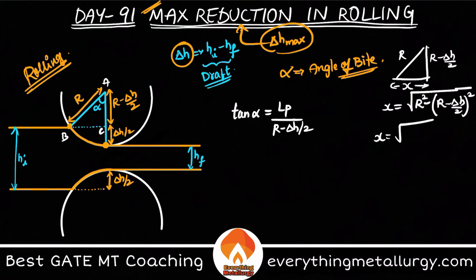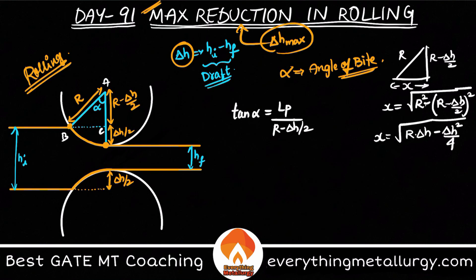After expanding, r squared gets cancelled and you get x equal to the square root of r times delta h minus delta h squared by 4. Since delta h is very small, delta h squared is negligible and can be dropped. So x, which is LP, can be approximated as the square root of r times delta h.